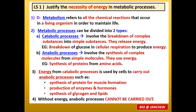Let's answer the first learning outcome: justify the necessity of energy in metabolic processes — in other words, explain the importance of energy production and usage in metabolic processes. So firstly, what are metabolic processes or metabolism? This refers to all the chemical reactions that occur in a living organism in order to maintain life and to carry out its living processes. There are two types of metabolic processes, as studied in Chapter 5: catabolic processes and anabolic processes.